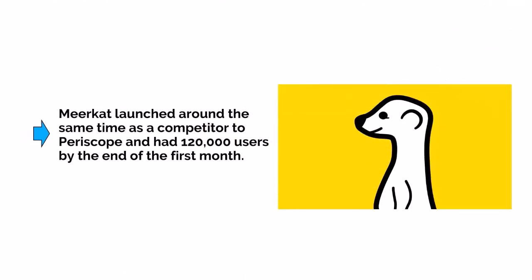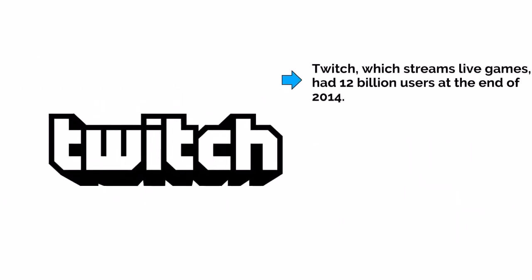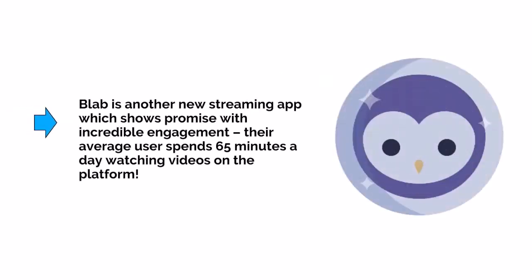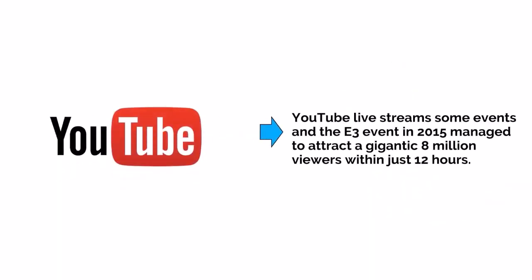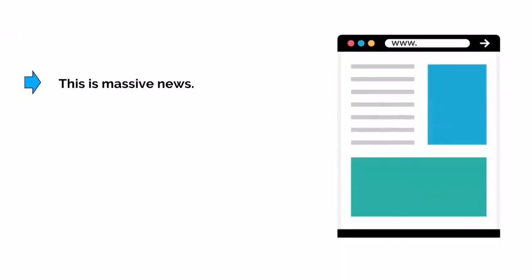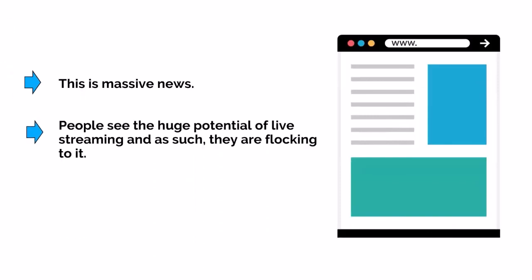Periscope isn't the only success story in this category. Meerkat launched around the same time as a competitor and had 120,000 users by the end of its first month. Twitch, which streams live video games, has 12 billion users. Blab is another new streaming app with incredible engagement — their average user spends 65 minutes a day watching videos on the platform. YouTube live-streamed the E3 event in 2015 and attracted 8 million viewers within just 12 hours. People see the huge potential of live streaming, and so should you.